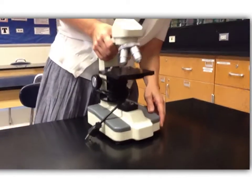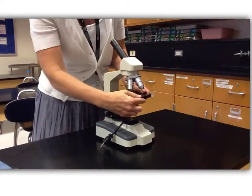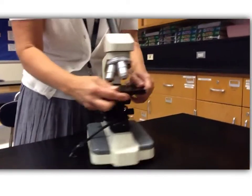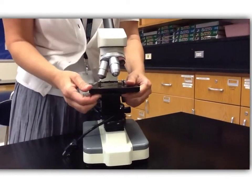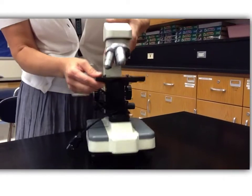You are going to also need to adjust the light because the light coming through the stage is going to need to be adjusted using this little knob here. This is called the diaphragm, and its job is to adjust how much light comes through.